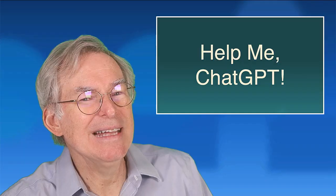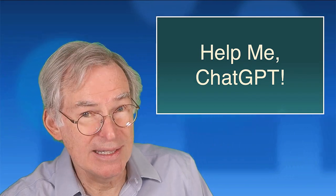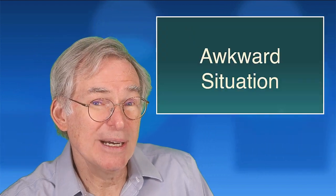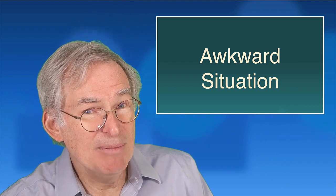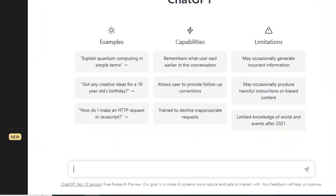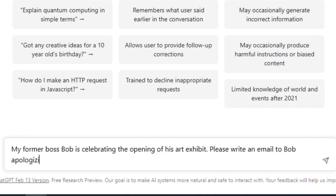Here's a personal example. Let's say my former boss invited me to the opening of his art exhibit. For several reasons, I really don't want to go. But I don't want to hurt his feelings. Let's see if ChatGPT can write a nice email to get me out of this. My former boss, Bob, is celebrating the opening of his art exhibit. Please write an email to Bob apologizing for the fact that I will not be able to attend.